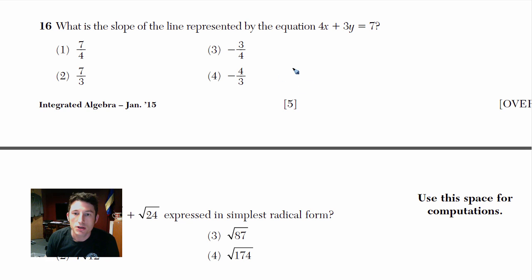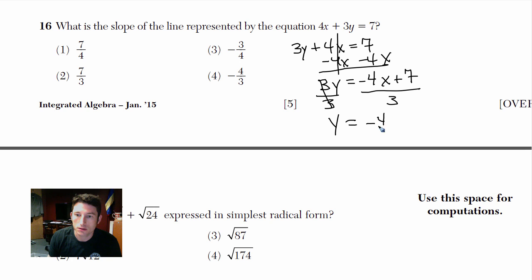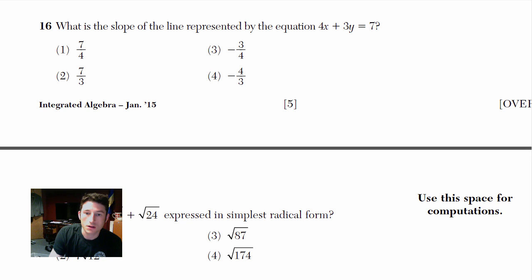Rewriting: 3y plus 4x equals 7. Subtract 4x from both sides: 3y equals negative 4x plus 7. Now divide both sides by 3: y equals negative four-thirds x plus 7 over 3. I don't even need to finish it — I'm just looking for slope, which is negative 4 over 3. Get y by itself in the form y equals mx plus b and the slope is m.